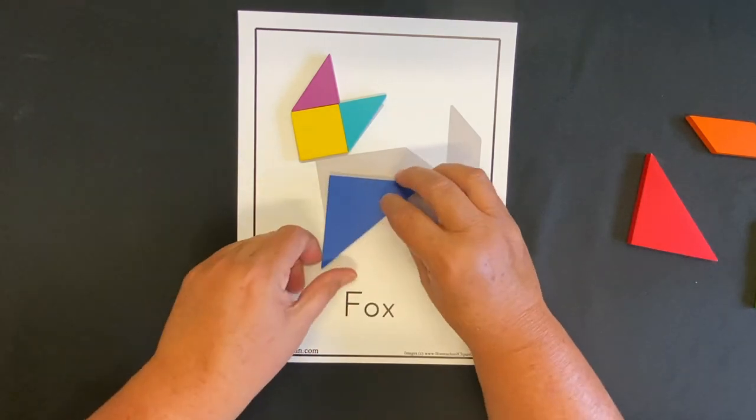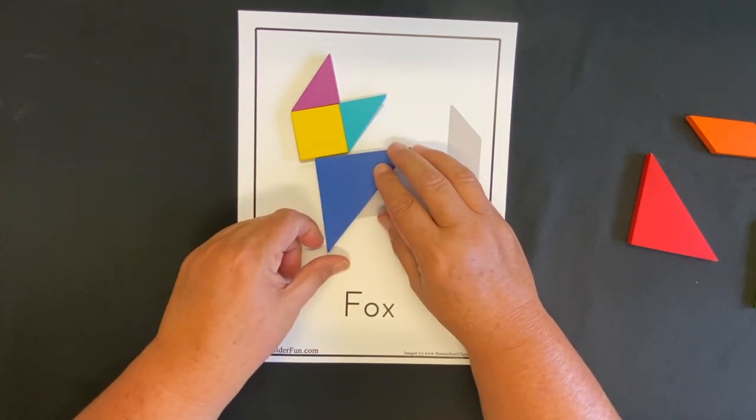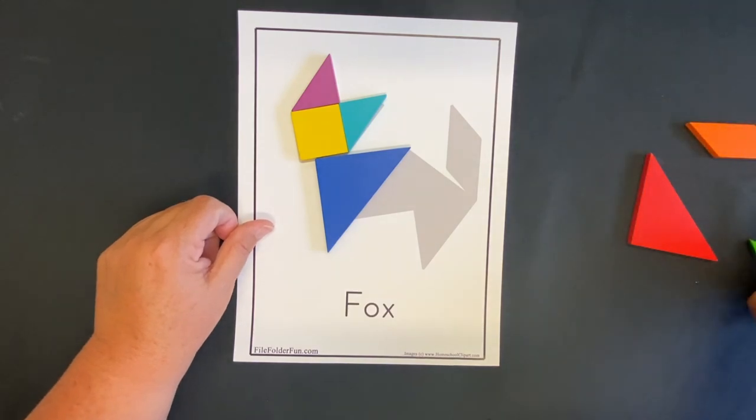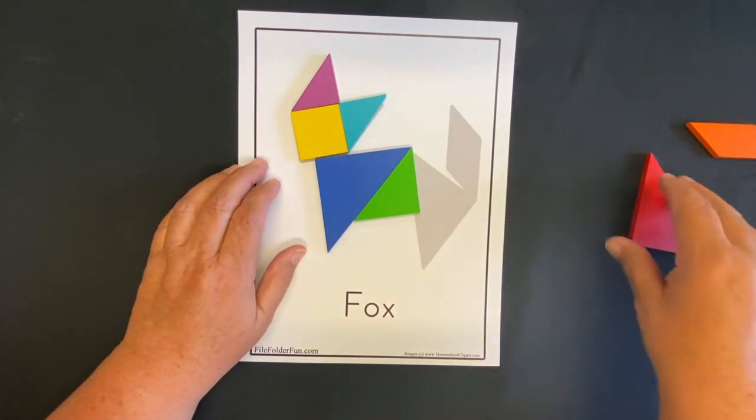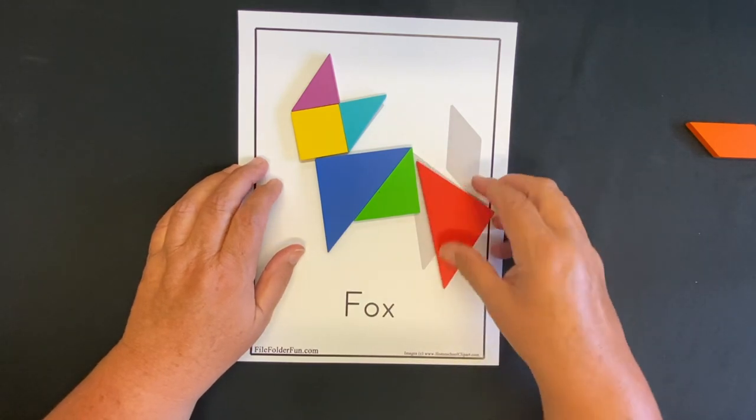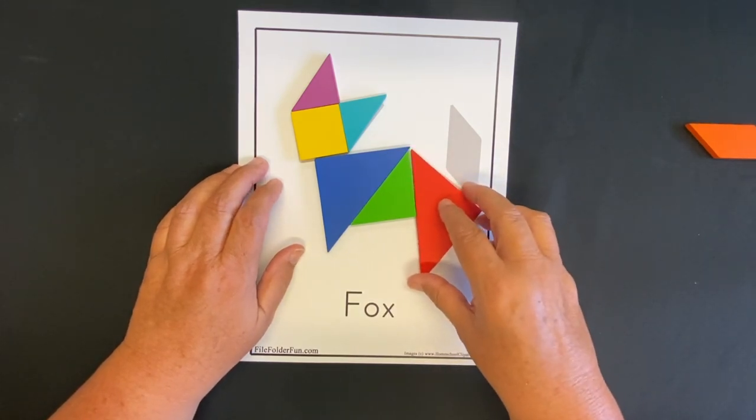And then we need a body and we need feet. So first, we're going to do a large triangle - it's going to be part of his body and his feet. And then we're going to use our medium triangle in the middle and our big one at the end. And look, we made his body and his feet.